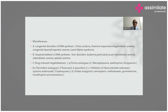Pyrimidine analogs such as 5-fluorouracil and 6-azauridine, as well as inhibitors of ribonucleotide reductase such as cytosine arabinoside and hydroxyurea, result in megaloblastic anemia. Folate antagonists including methotrexate, pyrimethamine, trimethoprim, and triamterene also result in folic acid deficiency and megaloblastic anemia.